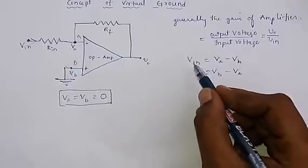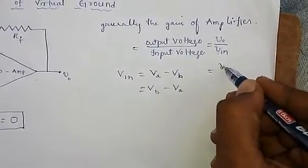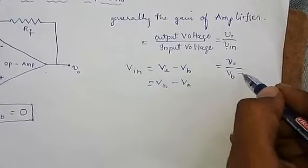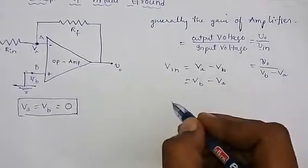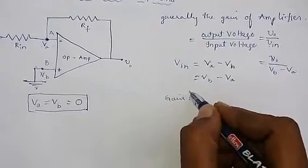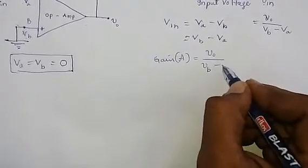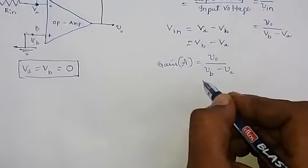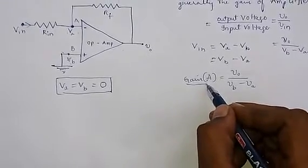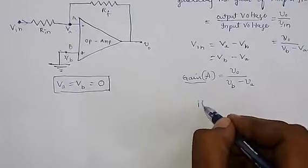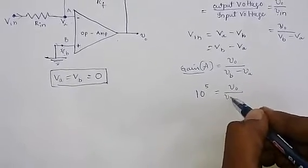Substituting into the gain formula: Gain A equals V-naught divided by (Vb minus Va). The gain of an operational amplifier is generally approximately 10 to the power 5 to 10 to the power 6. So V-naught equals A times (Vb minus Va), which means (Vb minus Va) equals V-naught divided by A, which is V-naught divided by 10 to the power 5.